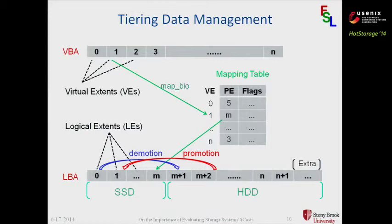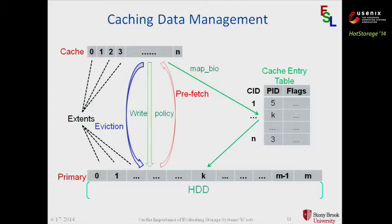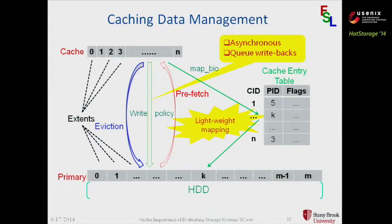In terms of the caching data management, it is also very similar to what we have seen, except two things. One thing is that the cache entry table in this caching architecture only maps from the cache device to the primary device — it is a partial mapping, whereas for tiering it maps from the whole virtual block address to the whole physical block address, so the mapping size can grow large as the system scales. Another difference is that the write policy kicks in when there is a write hit in the SSD cache. Our writeback is asynchronous: IOs are returned before writebacks are performed, and we queue writeback IO requests and schedule a kernel thread to perform writebacks.